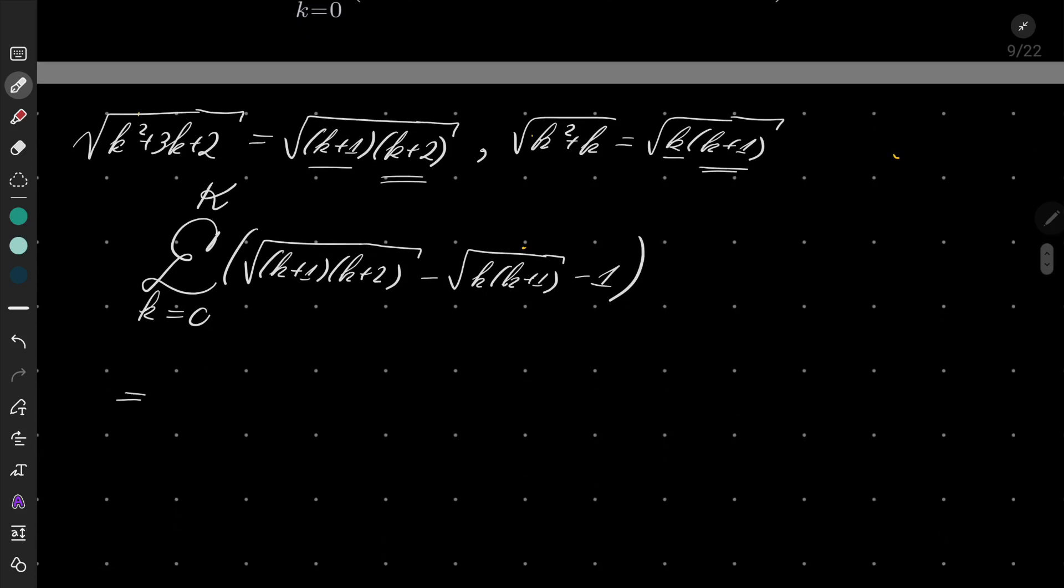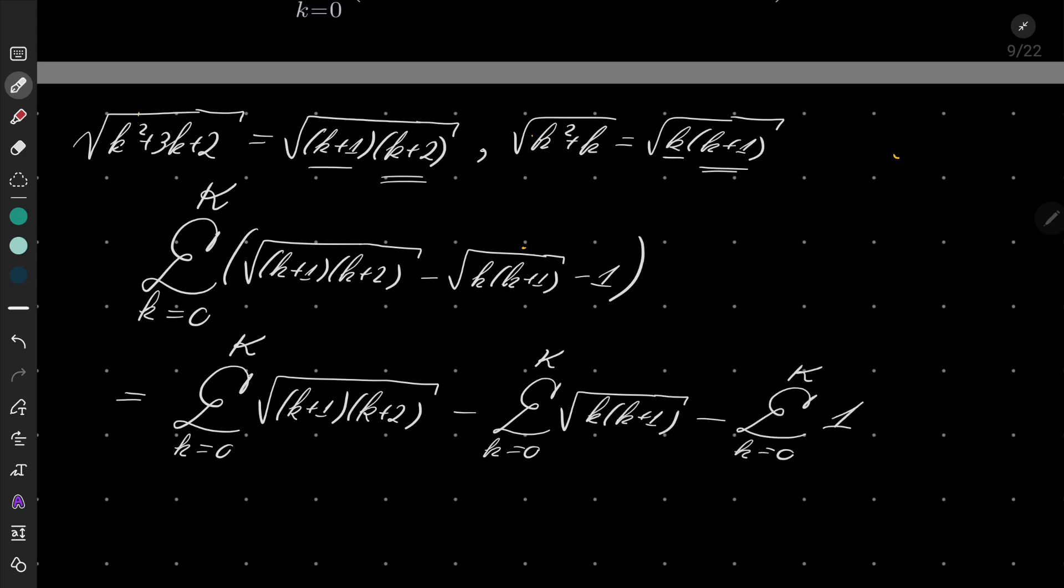And now I will split it into three different sums. First sum goes from 0 to capital K, second one goes from 0 to capital K of k times k plus 1, and the last sum also goes from 0 to capital K where we are summing a bunch of 1s.